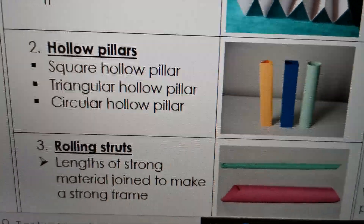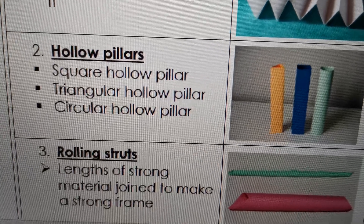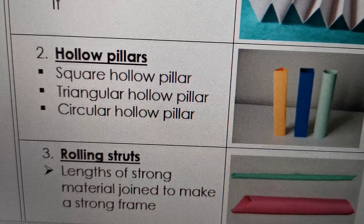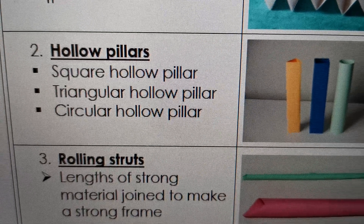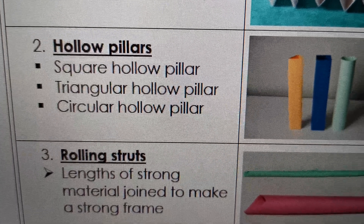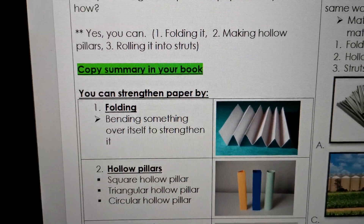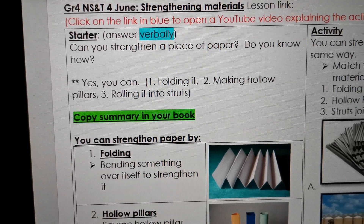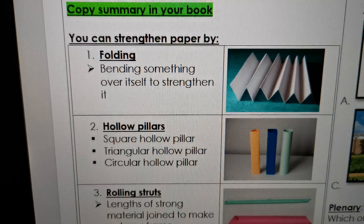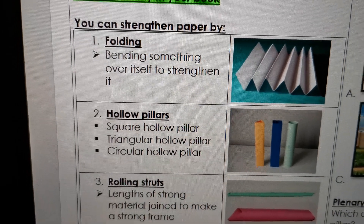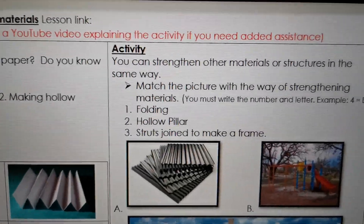The last one is rolling it into struts. We take the piece of paper and roll it into a thin strut, but you can join these struts together and make a frame, and that frame will be stronger. In your books, 'Strengthening Materials' is your heading - you can write the 4th of June. Copy the summary about the three ways of strengthening materials, and then we have a very short activity.